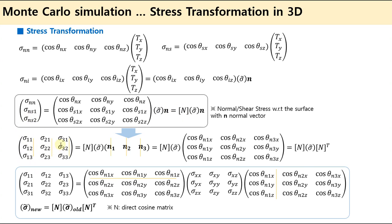So the stress tensor in the new axis will be a combination of stress vectors. It will be expressed as the direction cosine matrix times the old stress tensor, where the N vector forms the first, second, and third columns — that is the transpose of the direction cosine matrix. So the new stress tensor will be: direction cosine matrix N times the old stress tensor times transpose N.